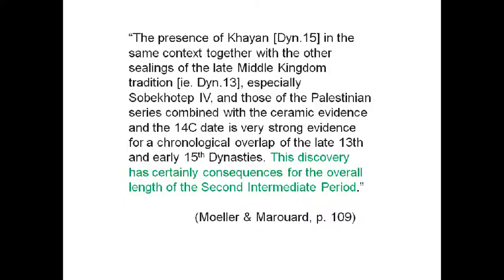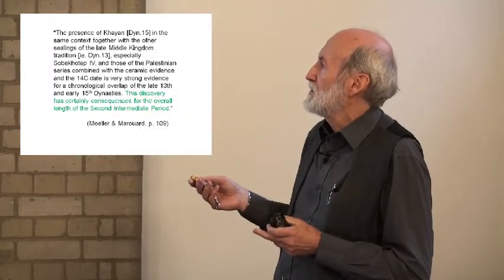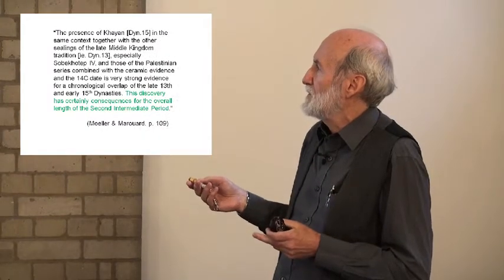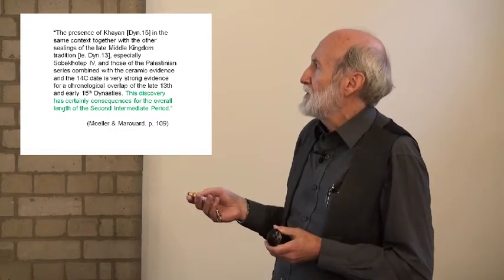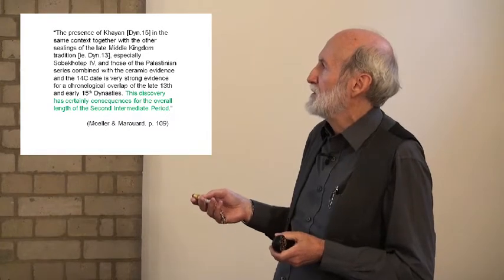The authors wrote: 'The presence of Khyan of dynasty 15 in the same context together with other sealings of the late Middle Kingdom tradition, especially Sobekhotep IV and those of the Palestinian series combined with ceramic evidence and a C-14 date, is very strong evidence for a chronological overlap of the late 13th and early 15th dynasties. This discovery has certainly consequences for the overall length of the Second Intermediate Period.'